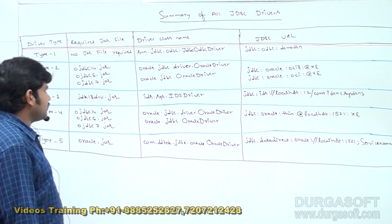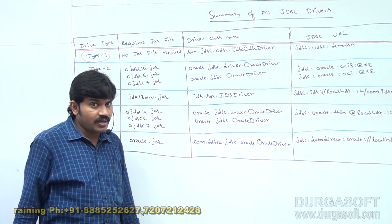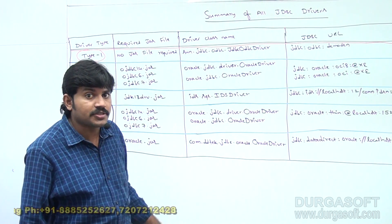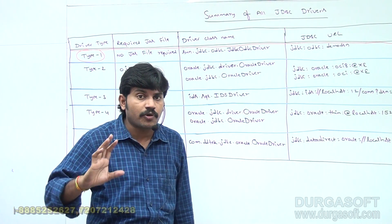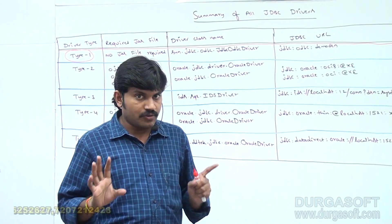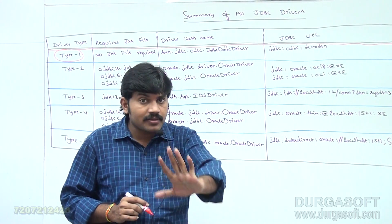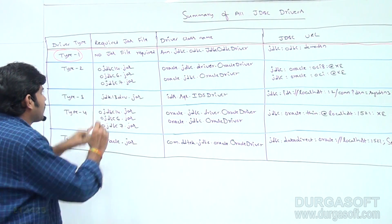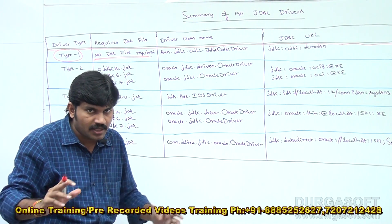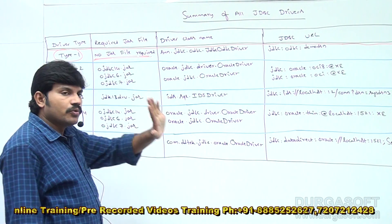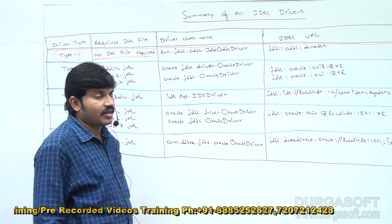Type 1 driver is also known as the JDBC-ODBC bridge driver. Type 1 driver is provided automatically as part of the JDK by Sun Microsystems — it is part of Java itself. That's why for Type 1 driver, no jar file is required. Once you install JDK, Type 1 driver is going to come automatically.